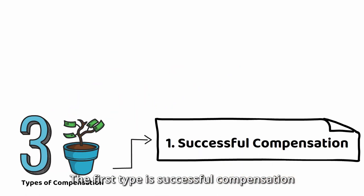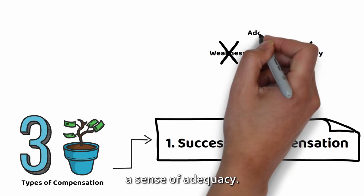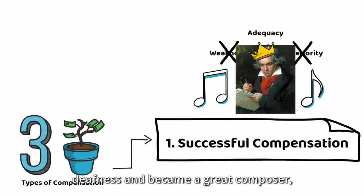The first type is successful compensation. These people successfully compensate their inferiority, so the feeling of weakness and inferiority will disappear, and they have a sense of adequacy. For example, Beethoven overcame his deafness and became a great composer.